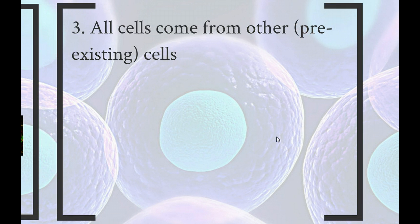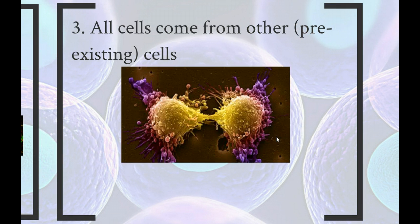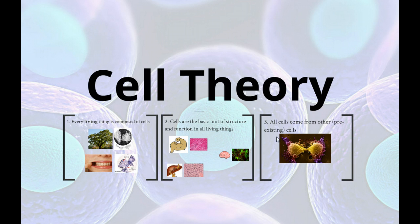Finally, all cells come from other or pre-existing cells. Cells don't just pop out of nowhere. They have to come from other cells that will actually divide in a process we call mitosis. More on that later. So big picture. Everything is made out of cells. Cells do everything and build everything, and they all come from other cells.